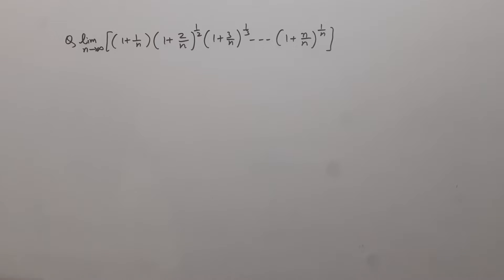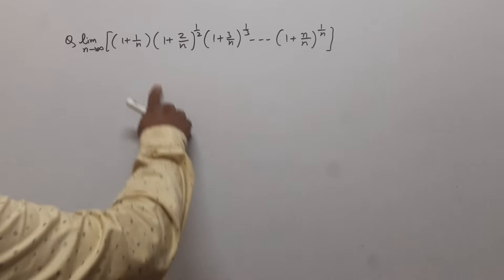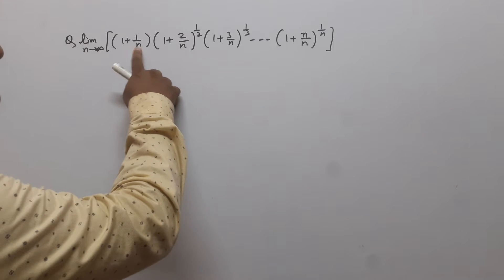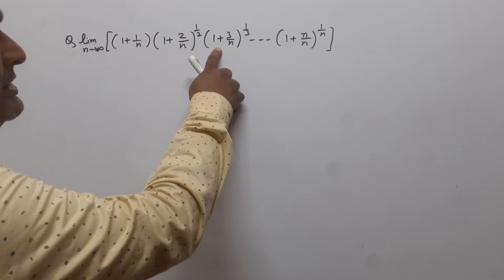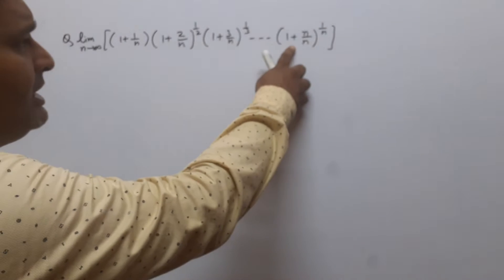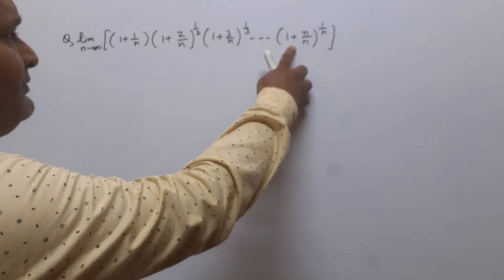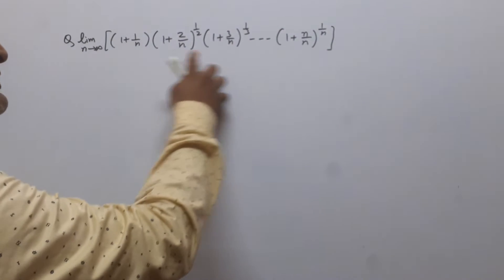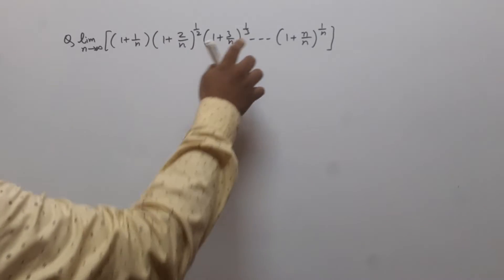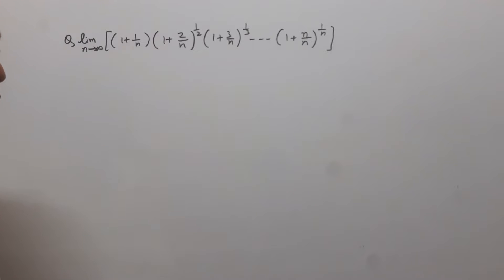Here, each term of this sequence is in a product. We can see the first term, the second term, the third term, and the n-th term. All these terms are in multiplication. So we use logarithm here.